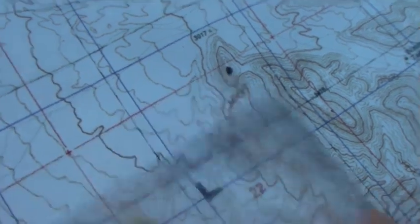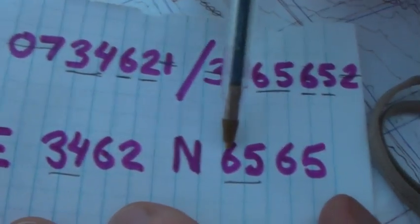So to review, I mark the 1000 meter grid square 34, 65.